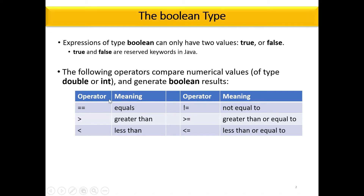We have the operator equal, greater than, lesser than — those are their meanings. The not-equal operator is represented by the exclamation point and equal symbol. Greater than or equal to is represented by its symbol, and less than or equal to is represented by its symbol.